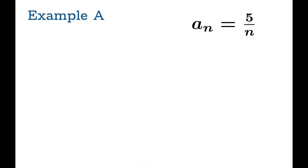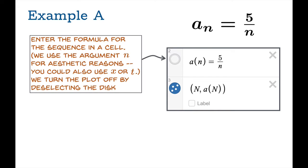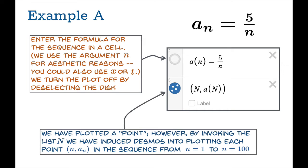So here's 5 over n. What we'll do is in a new cell we'll enter the formula for a, and we use function notation. We'll also use n for the argument for aesthetic reasons, although you could use x or t. This argument is a dummy variable; it won't matter when we plot this thing. I don't want the graph of the function itself—it'll be the graph of a continuous function—so I'm going to deselect the disk to turn that graph off, and then what I am interested in seeing is a collection of dots.